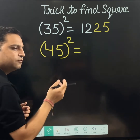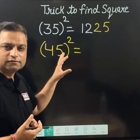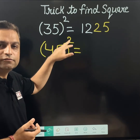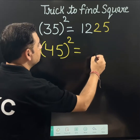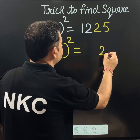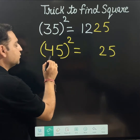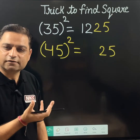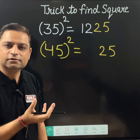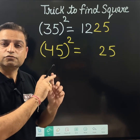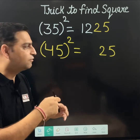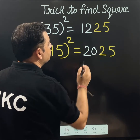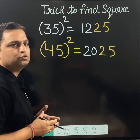You can also try this yourself. Since 5 squared is 25, we write 25 at the end. Now this number is 4. 4 should be multiplied with the next value, which is 5. So 4 multiplied by 5 is 20. Therefore the answer is 2025.